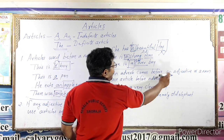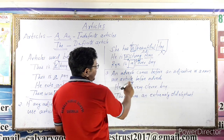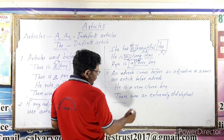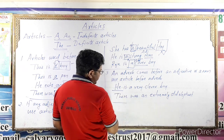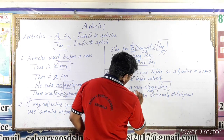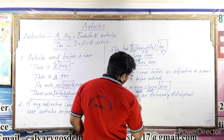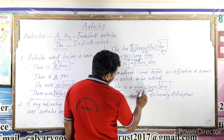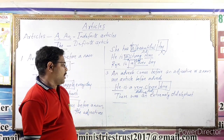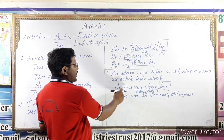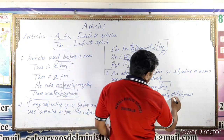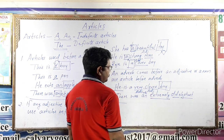If an adverb comes before an adjective or a noun, use the article before the adverb. He is a very clever boy — boy is the noun, clever is the adjective, very is the adverb, so 'a' comes before 'very.' There was an extremely old elephant — extremely is the adverb before the adjective 'old.'